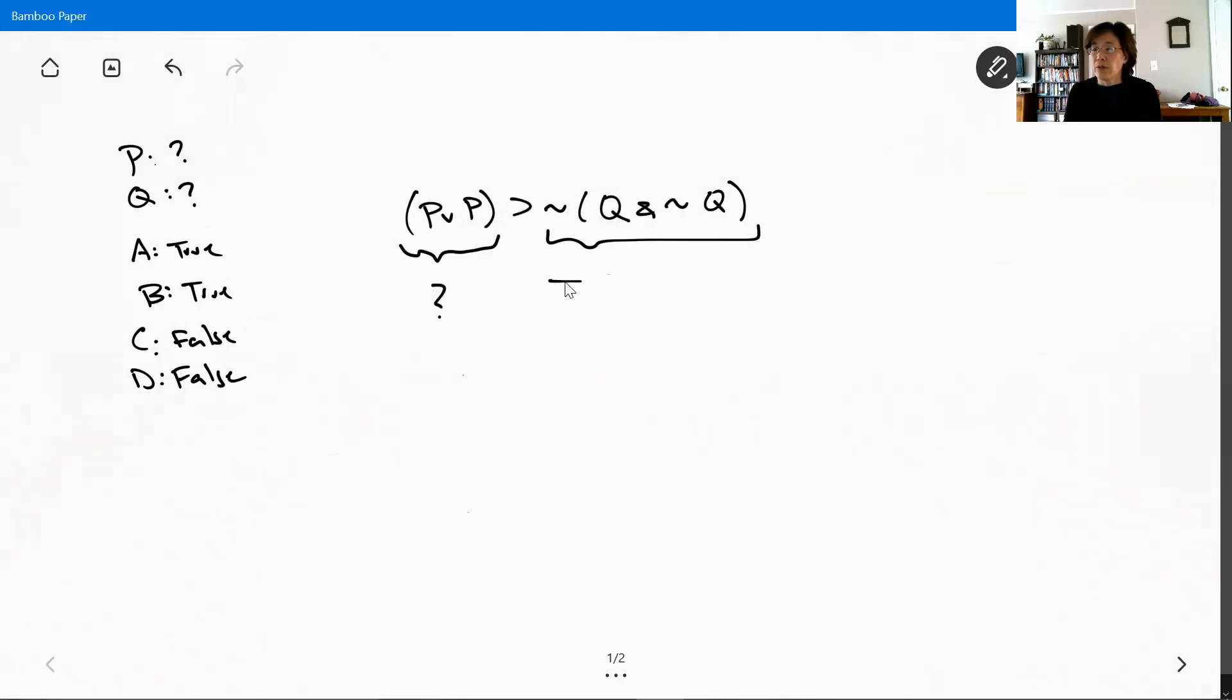Q is either true or false, and we don't know which one. If Q is true, the consequent ends up being true also. If Q is false, the consequent is still true.